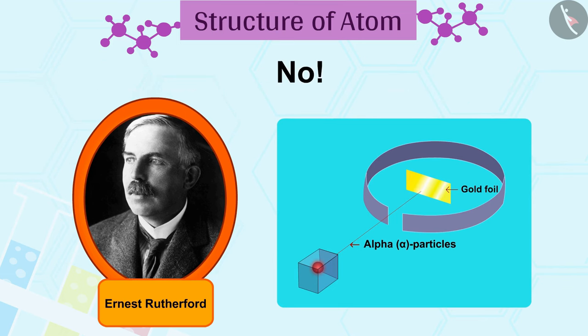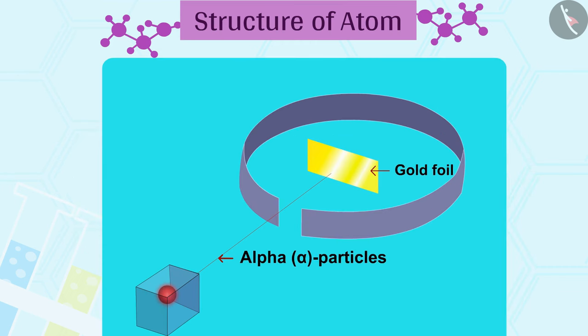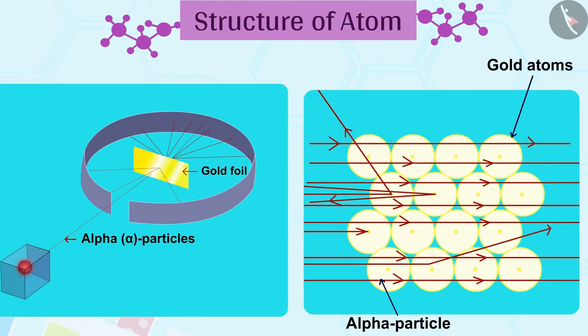No, rather the alpha particle scattering experiment gave totally unexpected results. Most of the fast moving alpha particles passed straight through the gold foil. Some of the alpha particles were deflected by the foil by small angles. Surprisingly, one out of every 12,000 particles appeared to rebound.